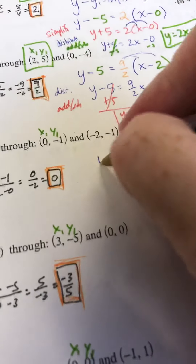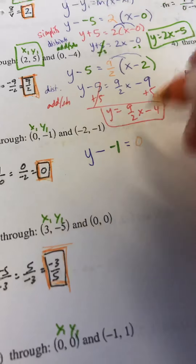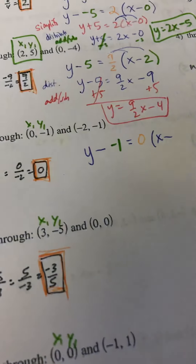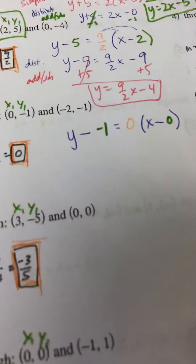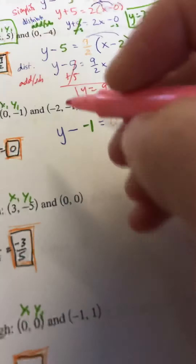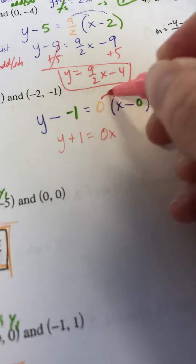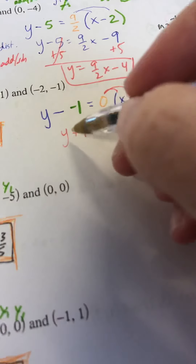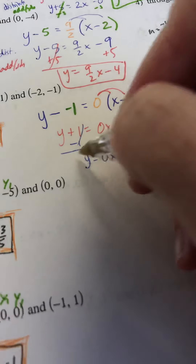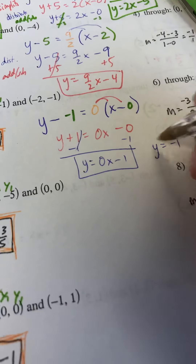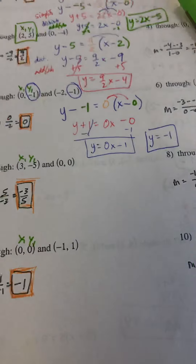From the beginning this time: y minus y1 equals m times x minus x1. There are shortcuts you could take, but doing the same thing every time leads to success. We have a double negative, so simplify to y plus 1 equals, then distribute 0 times x minus 0. Subtract 1 from both sides and we get y equals 0x minus 1, or simply y equals negative 1. Both y-values were negative 1, so that is a proper equation.